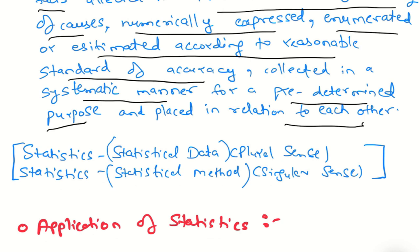Collected in a systematic manner for a predetermined purpose. If we collect data, we should first know why am I collecting data? We need to know this purpose. And place in relation to each other. We can compare rainfall in Maharashtra and Gujarat, in Mumbai or suburban Mumbai. We should compare data in relation to each other.